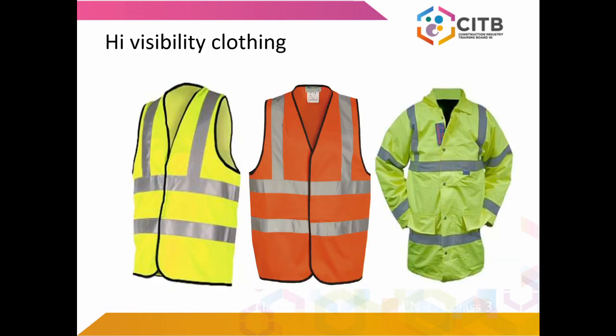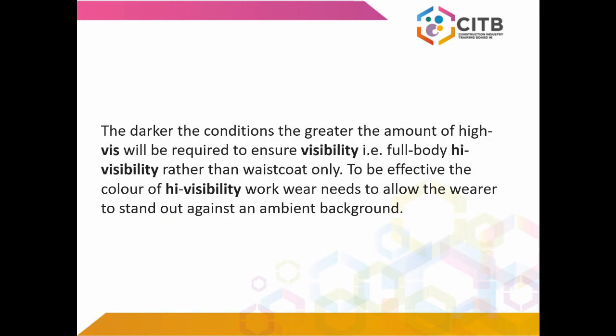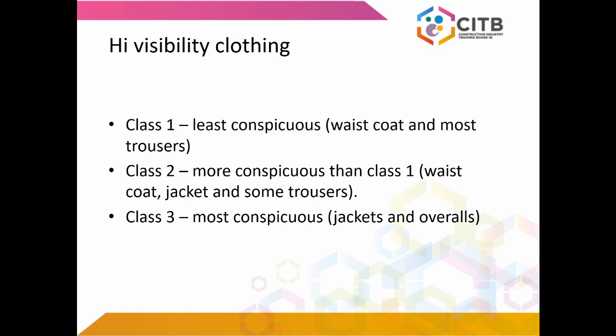High visibility clothing: the darker the conditions, the greater the amount of high-vis will be required to ensure visibility — for example, full body high visibility rather than a waistcoat only. To be effective, the colour of high visibility workwear needs to allow the wearer to stand out against an ambient background. High visibility clothing comes in three classes: Class 1 is the least conspicuous — waistcoat and most trousers. Class 2 is more conspicuous — waistcoat, jacket and some trousers. Class 3 is the most conspicuous — jackets and overalls.